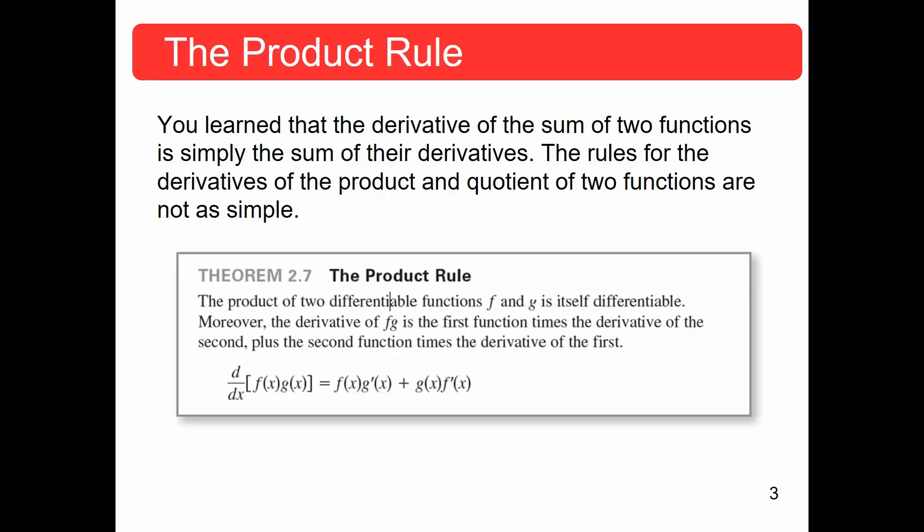In this video, we are looking at the product rule. You've learned that the derivative of the sum of two functions is basically just taking the sum of each of their derivatives. However, the rule for the product and quotient are quite a bit different — you can't just take the derivatives and multiply them together.